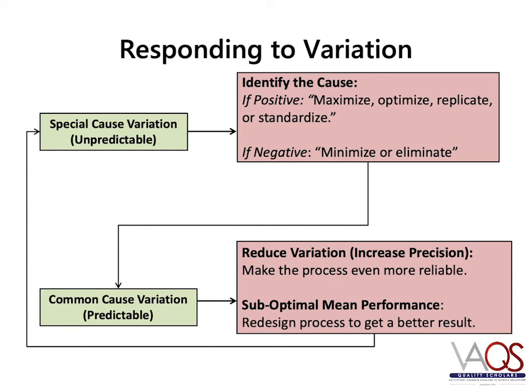Monitoring improvement data using statistical process control charts enables us to understand variation in our system and should guide our improvement efforts. Special cause variation means that the system performance is unpredictable. Teams should work to identify assignable causes for changes in system performance. If the system performance is desirable, teams will work to maximize, optimize, replicate, or standardize the change. If the system performance is undesirable, teams will work to minimize or eliminate the change. Subsequently, systems may move into a phase where there is common cause variation and the near-future performance of the system is predictable. However, just because the performance is predictable does not mean that it is desirable. If there is too much variation, the team may work to make the process more reliable. If the mean performance is not optimal, the team may redesign the process to get a better result. In either case, these changes may result in new special cause variation and the cycle would continue.